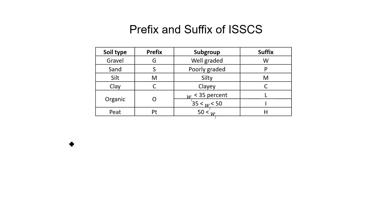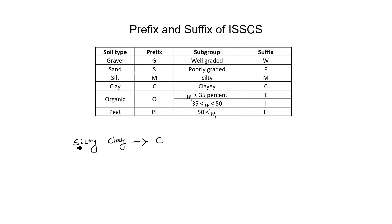Suppose we need to give the nomenclature of silty clay. We write the prefix of clay first — the prefix of clay is C — and the prefix of silt is M. So the notation and nomenclature of silty clay is CM.